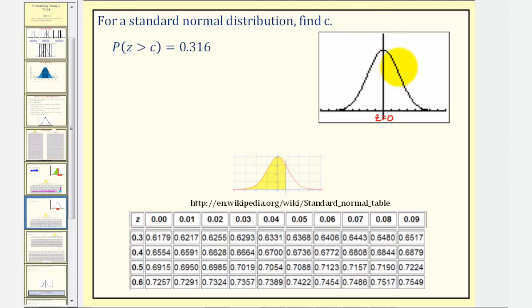So let's say we're looking for a Z-score somewhere in here, where Z equals C, and because we have Z greater than C, the area to the right, or this area here, under the standard normal distribution curve, would be 0.316.